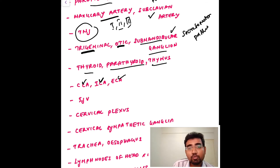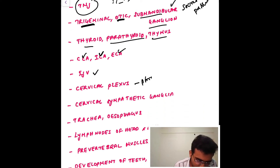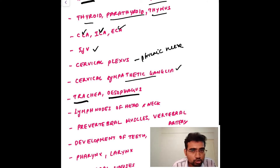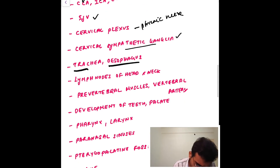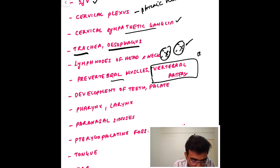You should be very well aware of the branches of the internal, external, and common carotid arteries. The internal jugular vein is also very important. The cervical plexus includes the phrenic nerve and the cervical sympathetic ganglia. For the trachea and esophagus, focus mainly on their clinical aspects. The lymph nodes of the neck are very important, as are the pre-vertebral muscles, the vertebral artery, and the circle of Willis.